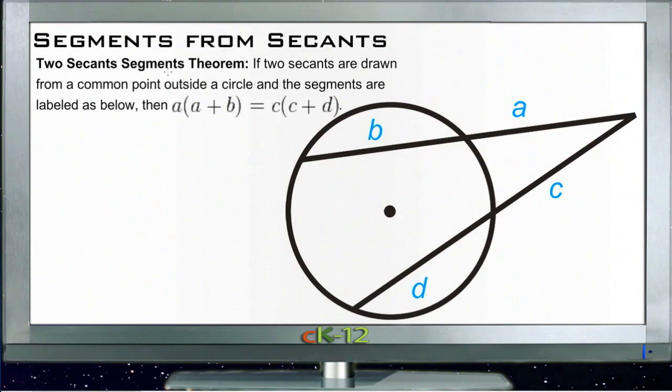Segments from secants is another quick single theorem lesson. It deals with secant lines, which are lines that don't run just tangent to a circle, but actually cross into a circle.